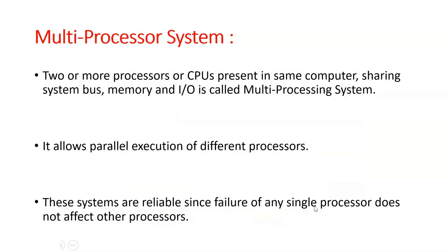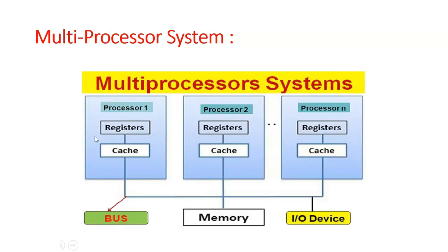Each processor is going to execute different tasks. It allows parallel execution of different tasks. These systems are reliable since if one processor fails, it does not affect the others. For example, if processor one fails, it does not affect the execution of processor two and three.